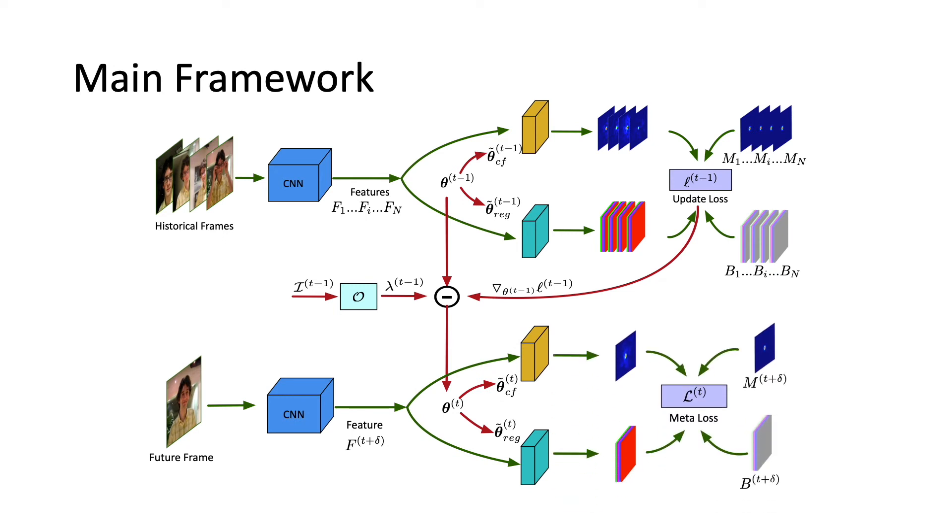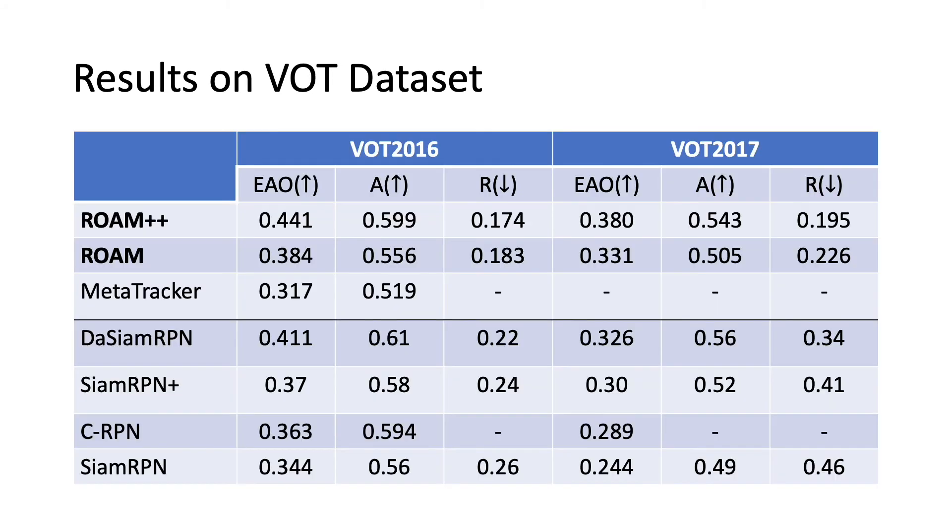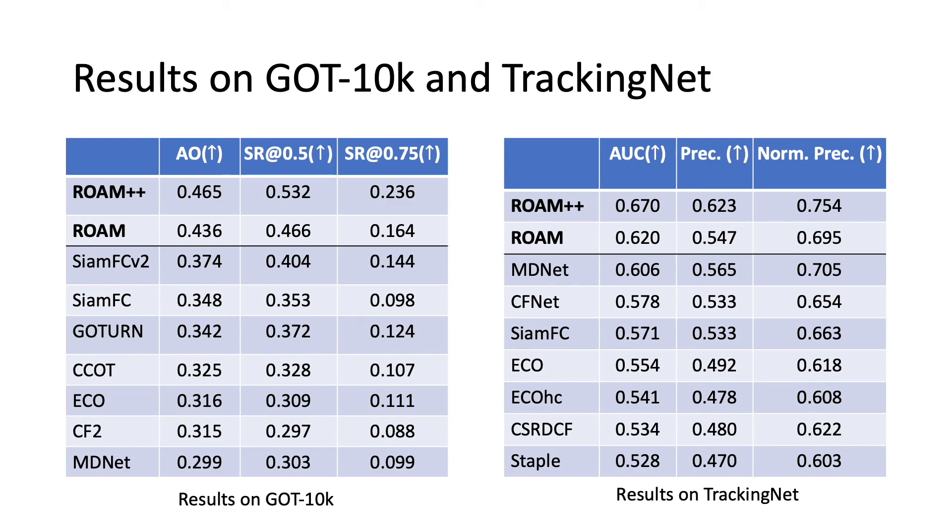Both our ROAM and ROAM++ outperform the baseline meta tracker with a large margin on OTB and VOT datasets. Our tracker also achieves state-of-the-art performance on large-scale datasets including LaSOT, GOT-10k, and TrackingNet.